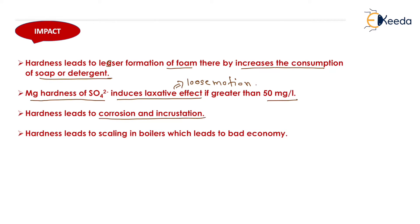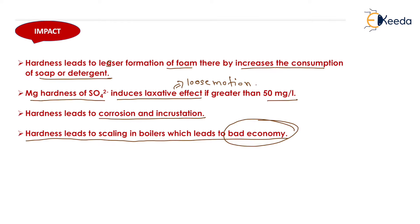Hardness also leads to corrosion and incrustation. If hard water is supplied through a GI (galvanized iron) pipe, it leads to corrosion of the pipe; if supplied to boilers, it leads to incrustation. This scaling inside the boiler causes a large amount of energy to be required to boil the water, which leads to bad economy — hardness in boilers increases energy consumption.